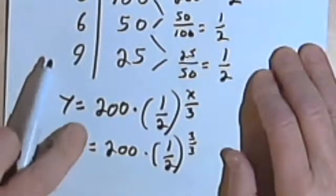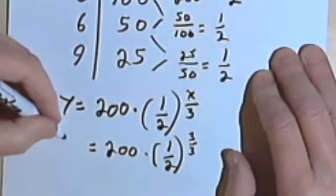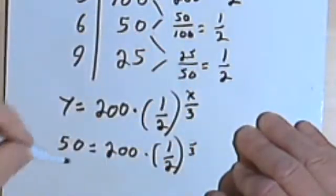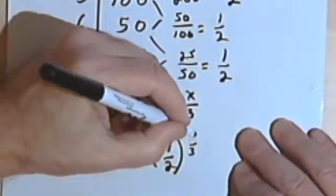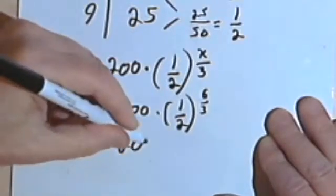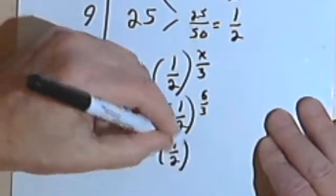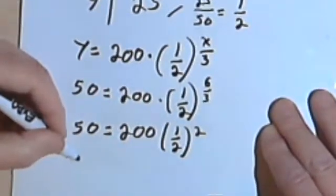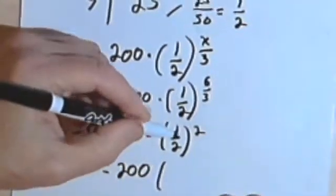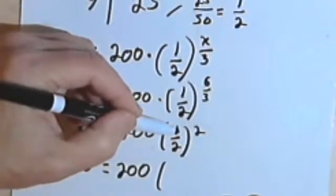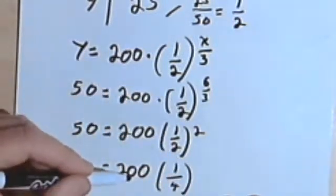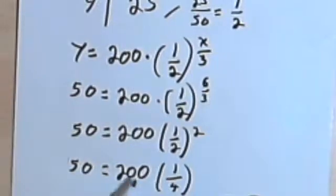We'll do one more pair. I've got a 6 and a 50. So when I've got a 50 as the y, I'll have 50 equals 200 times one-half to the 6 over 3. 6 over 3 is the same as 2. 50 equals 200 times one-half squared. So 50 equals 200 times... Well, I've got to take this one-half and square it. One raised to the second power is still just 1. And 2 raised to the second power is 4. So that's going to be 200 times one-quarter. And one-quarter of 200 is 50.